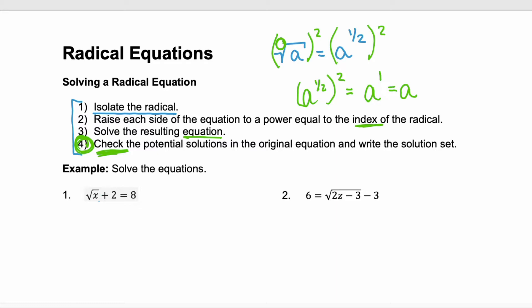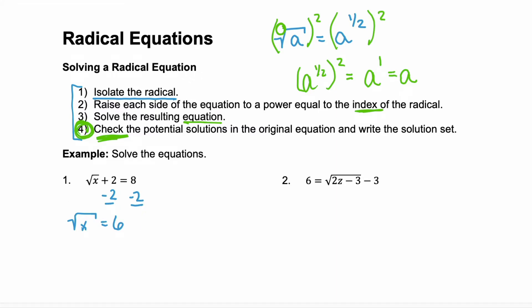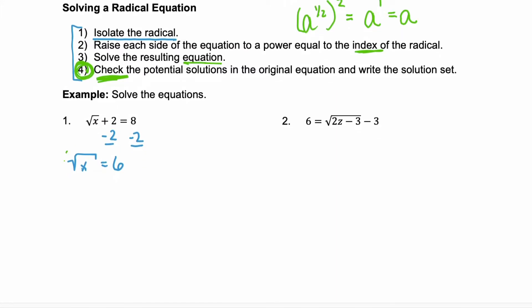Example one: the square root of x plus 2 equals 8. First, let's isolate that square root of x. Subtract 2, and we have the square root of x is equal to 6. The next step is to square both sides. Because we have the square root, to get rid of the square root, we square. So the left side becomes the radicand, just x. And the right is 6 squared, which is 36.